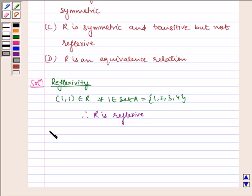Now let us check for symmetry. (1,2) belongs to R but (2,1) does not belong to R. Therefore R is not symmetric.